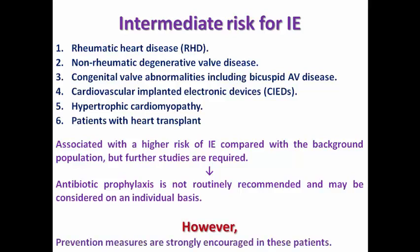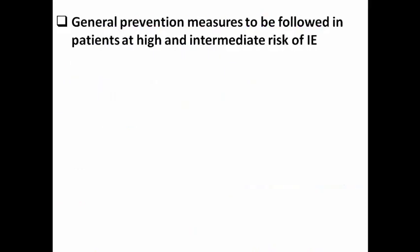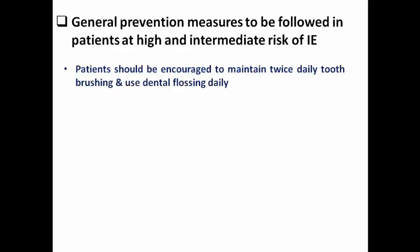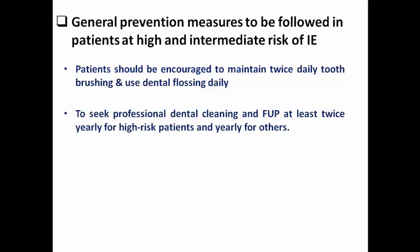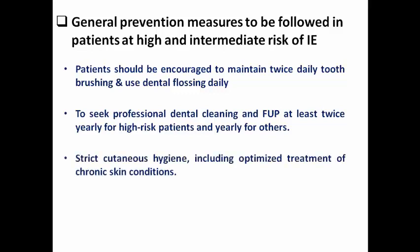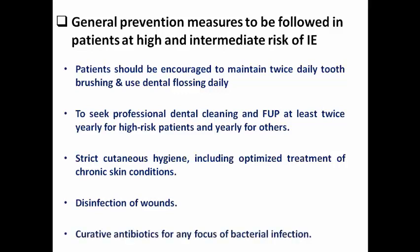Prevention measures are strongly recommended in patients at high or intermediate risk. General prevention measures include maintaining twice-daily tooth brushing and daily dental flossing, seeking professional dental cleaning and follow-up at least twice per year for high-risk patients and once per year for intermediate-risk patients.